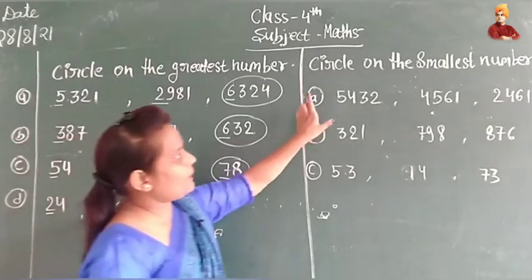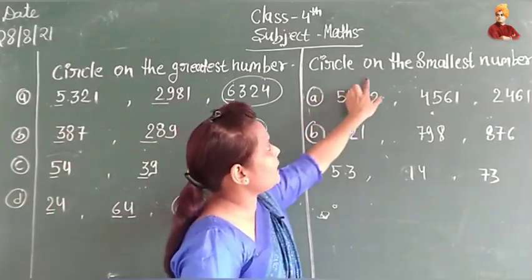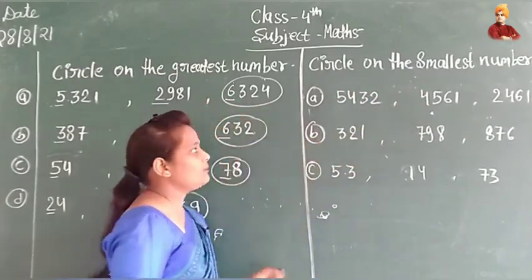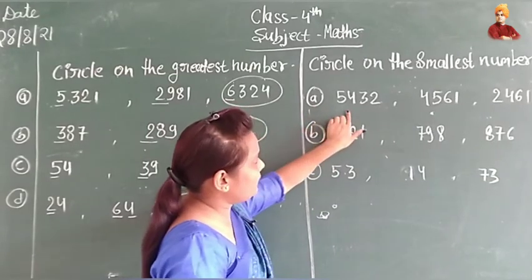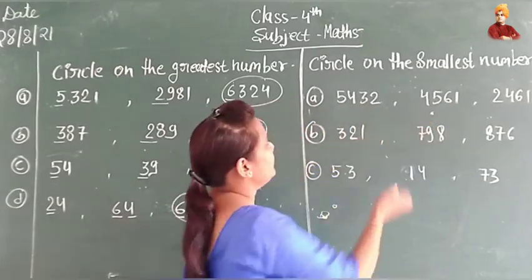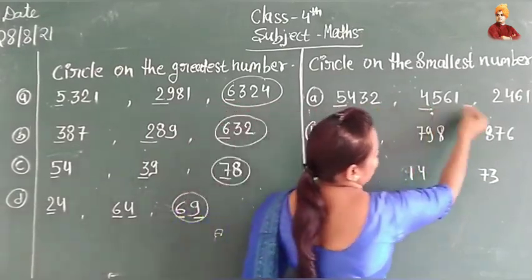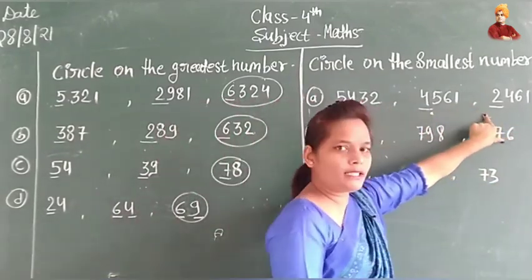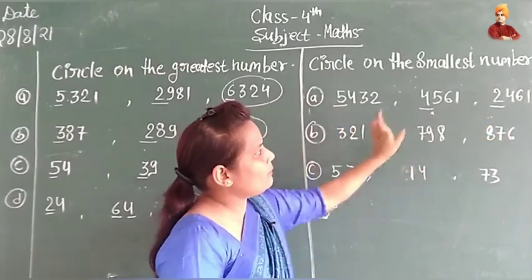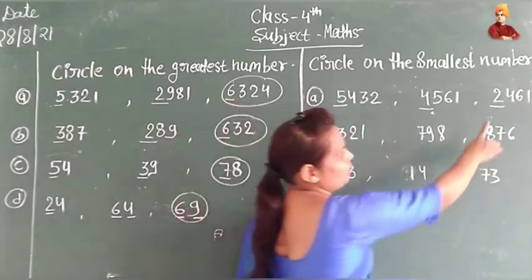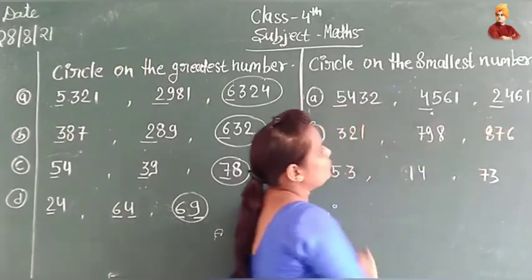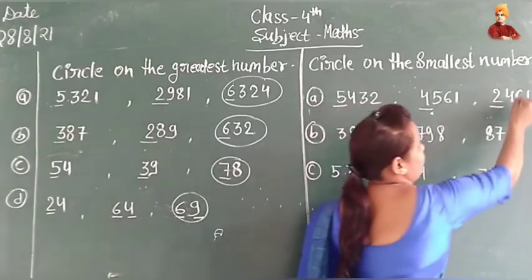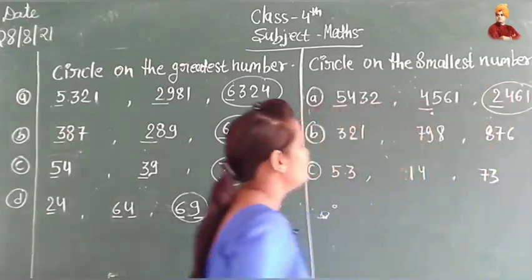Now, see how we find the smallest number. We circle the smallest number. We have a set of three numbers and we look at the left side — the first digit — of each number. Here, 5, 4, and 2 are written. The smallest digit is 2, so 2,461 is the smallest number. We add the circle to that.